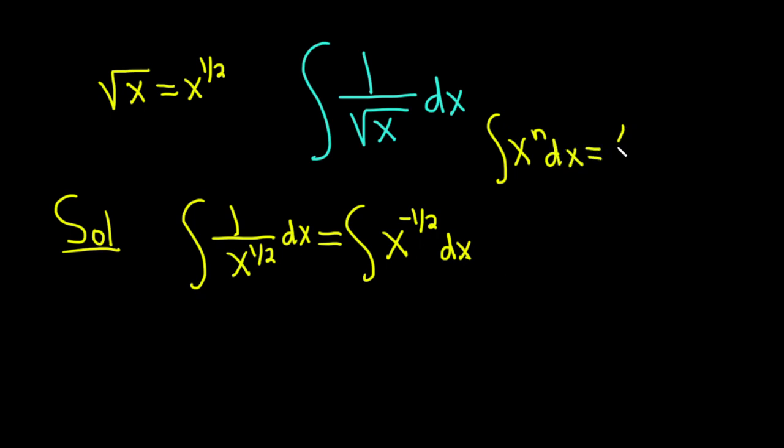this is equal to x to the n+1 over n+1 plus c. And this works almost always. It won't work if n is negative 1. So this is valid for all n not equal to negative 1. If n equals negative 1, you get the natural log of the absolute value of x.